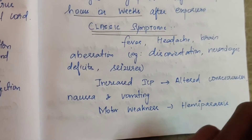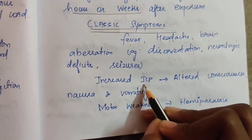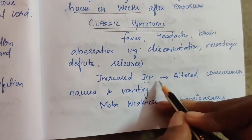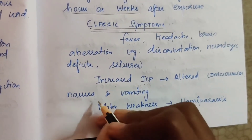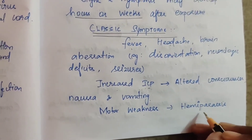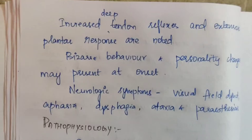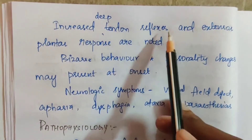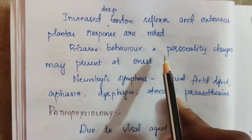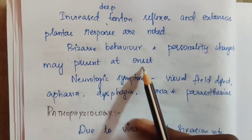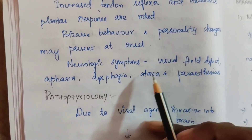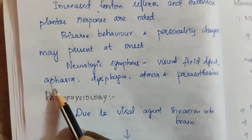Encephalitis affects the brain and spinal cord and can raise intracranial pressure (ICP), leading to altered consciousness, nausea, and vomiting. Motor weakness and hemiparesis may occur. Increased deep tendon reflexes and extensor plantar response are noted. Lethargy and personality changes may be present at onset. Neurological symptoms include visual field defects, aphasia, and dysphagia — difficulty in swallowing.